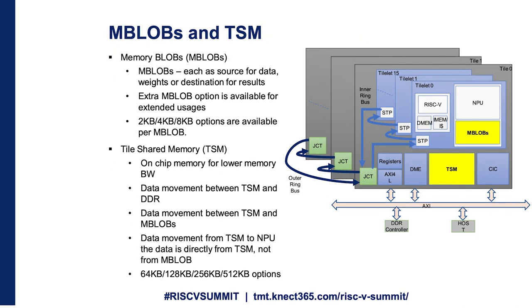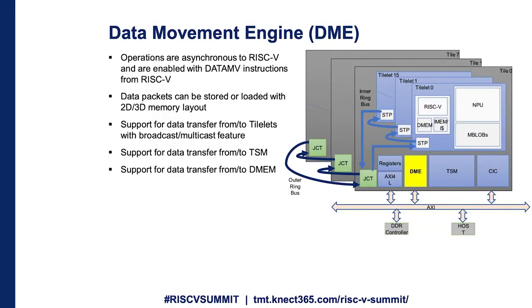Coming to the on-chip memories, there are two types: memblobs and TSM. Inside the memblobs, each memblob can be loaded with source, weight, and destination data, and there can be an extra memblob for double buffering. Different memory size options are available. The tile-shared memory acts as a large on-chip memory, and different memory size options are available for the TSM as well. All memblobs and the TSM are loaded using the data movement engine. The DME is similar to a DMA and is configured through a data-move instruction from the RISC-V. It supports 2D or 3D memory layout storage onto on-chip memories, and also supports multicast and broadcast features. Data can be transferred from the TSM through the DME, and the TSM can also interact with the NPU and share data with the memblobs.